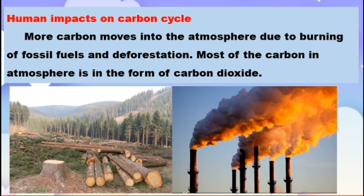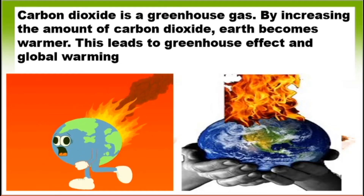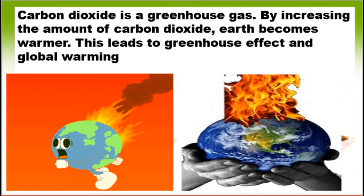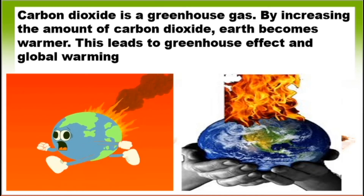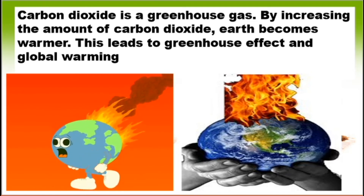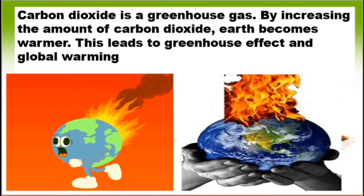This is one of the human disruptions to the carbon cycle. More carbon moves into the atmosphere due to burning of fossil fuels and deforestation. Most of the carbon in the atmosphere is in the form of carbon dioxide. Carbon dioxide is a greenhouse gas, and increasing the amount of carbon dioxide on Earth makes the Earth warmer.